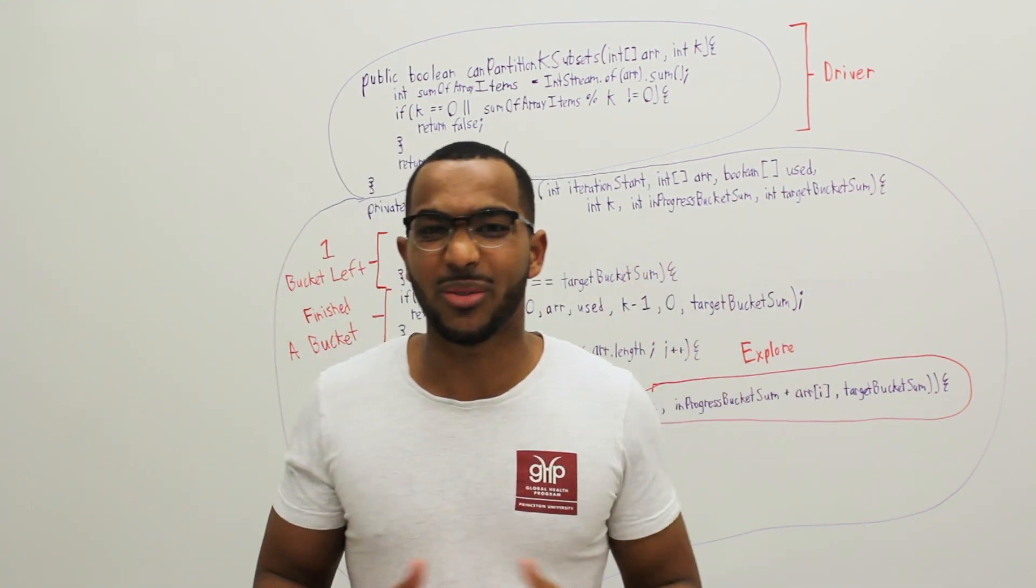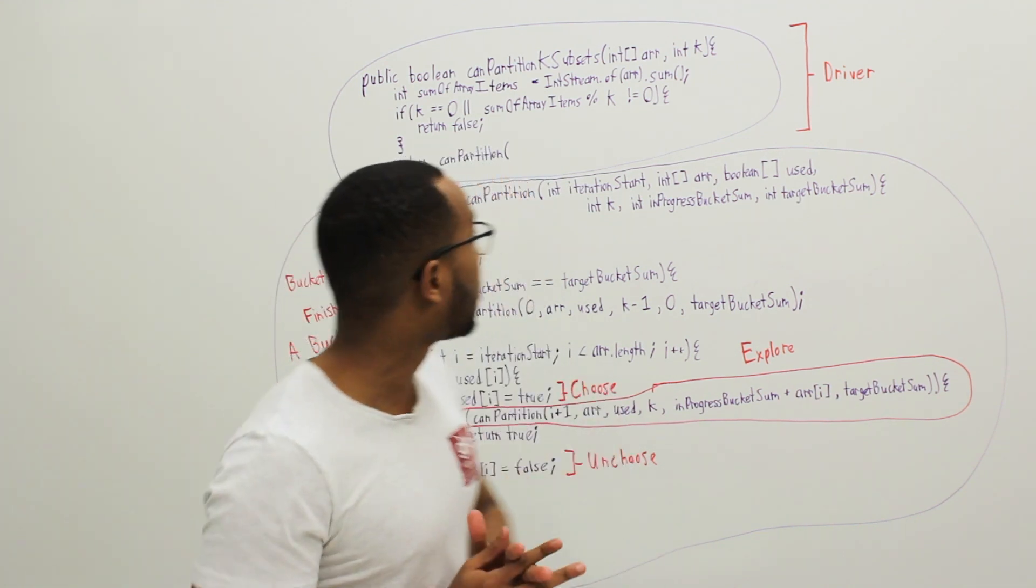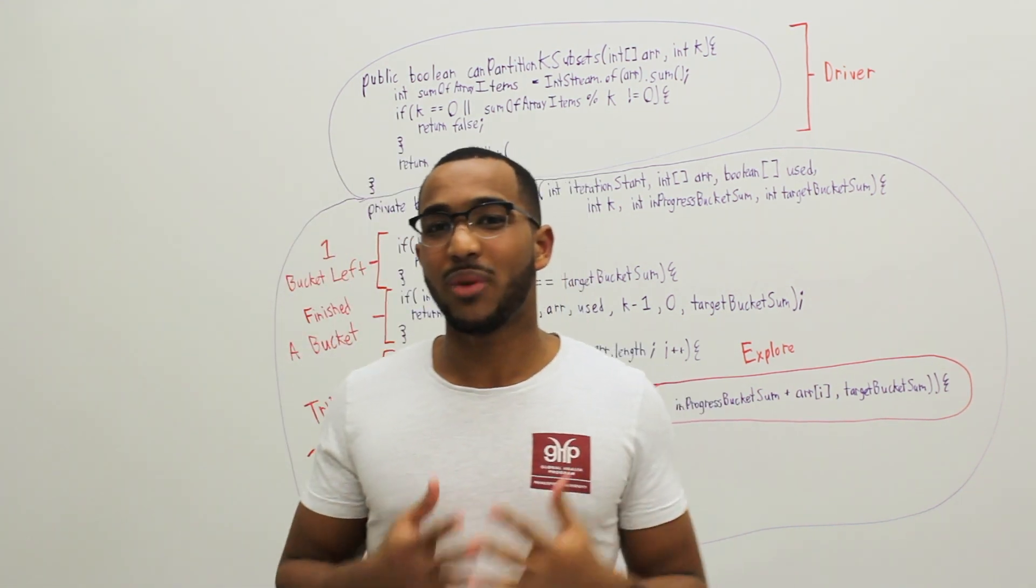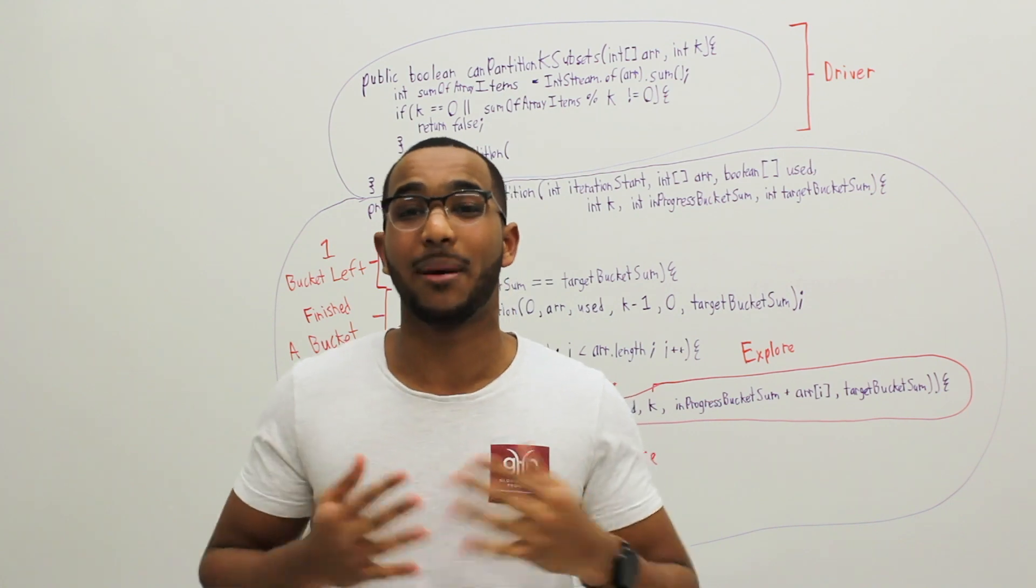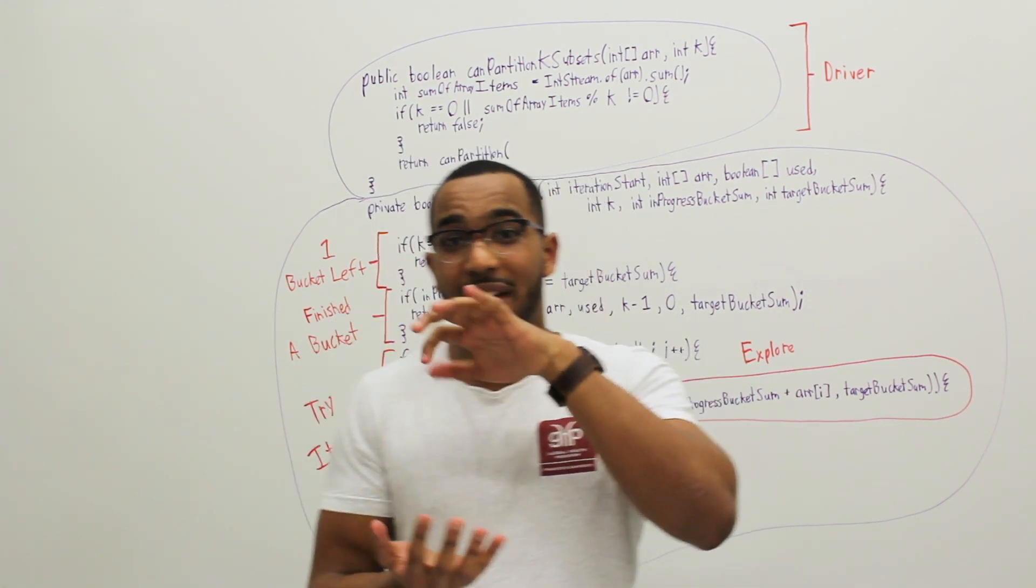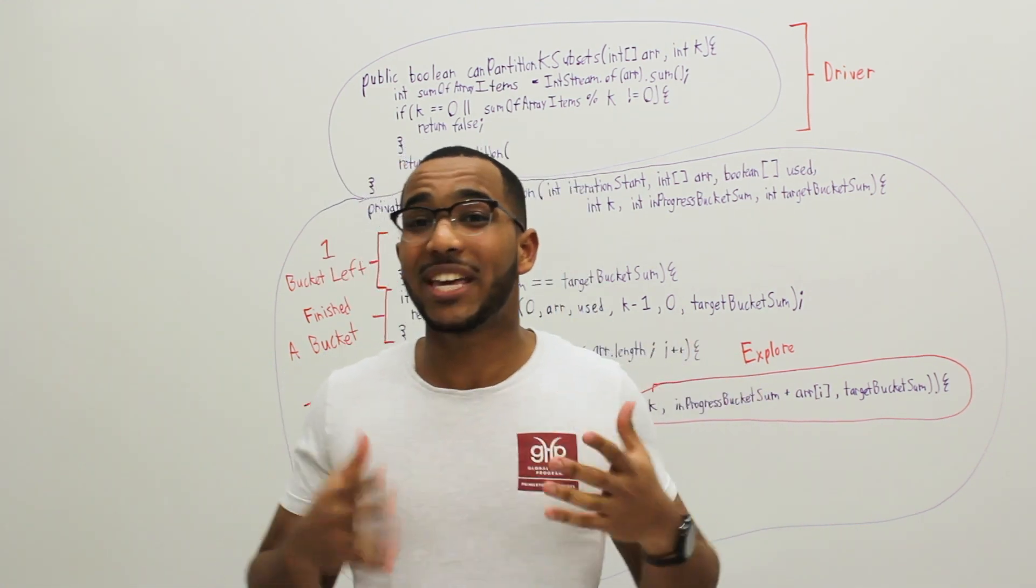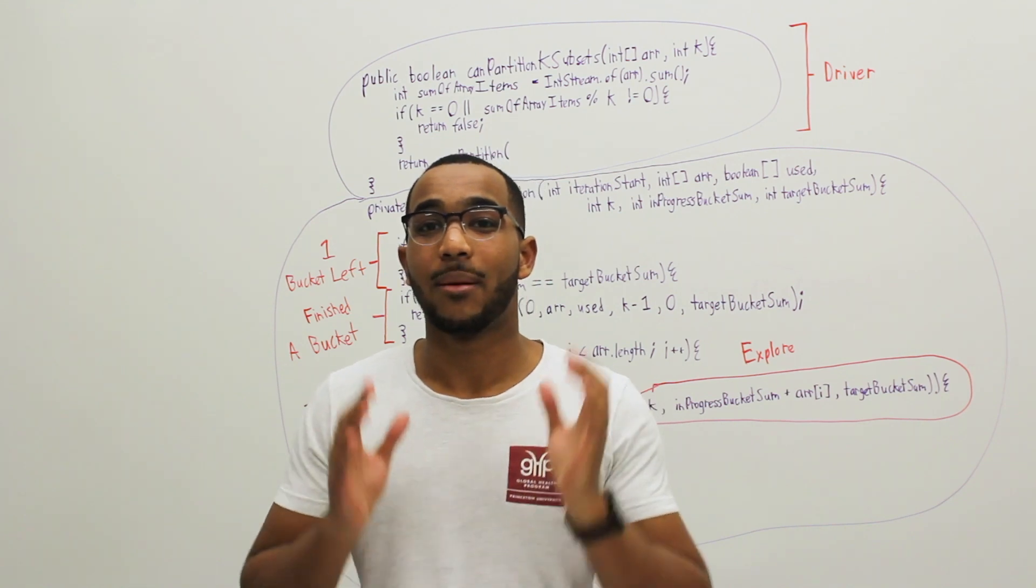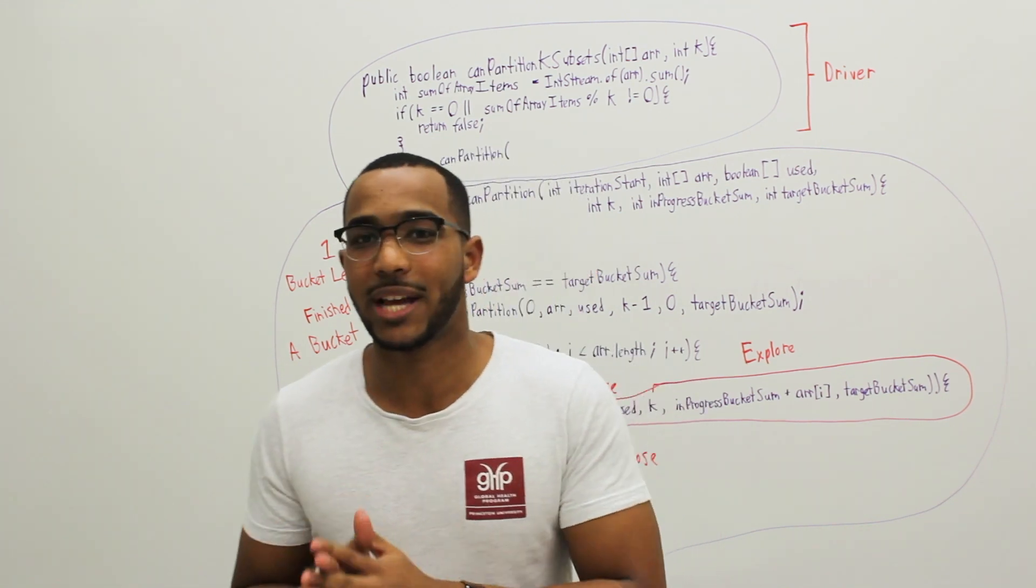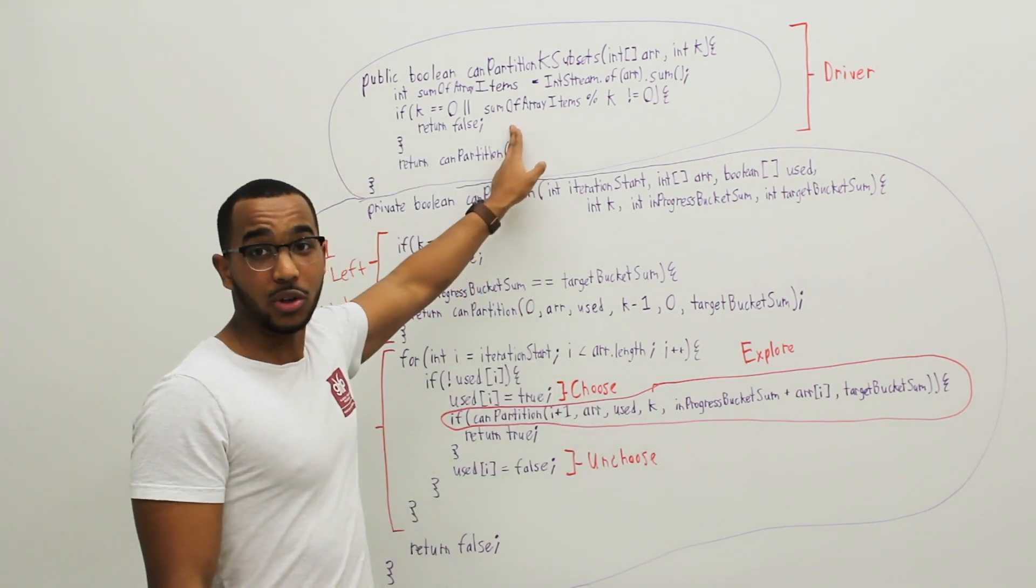If the sum of all the items in the array divided by k does not equal 0, this means that we're going to have to have a floating point amount, a decimal amount in each bucket. We're going to have a subset sum that is a decimal amount or a floating point amount. But we can't do that. We can't fill that bucket with integers and expect to hit a floating point amount. That's impossible. So that's why we return false there.